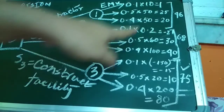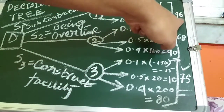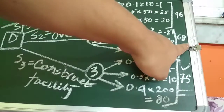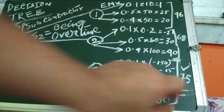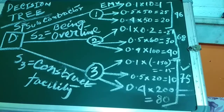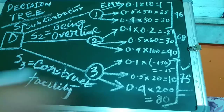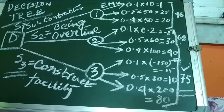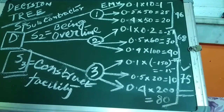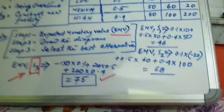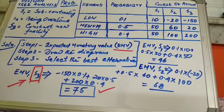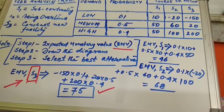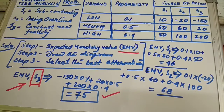After constructing the decision tree, we select the best alternative. For subcontracting it is 46, for overtime it is 68, but for constructing a new facility it is 75. So 75 is selected and the corresponding alternative is S3. We are taking the decision to go with S3. That was the problem and solution — I hope you understand how to construct a decision tree. Thank you.